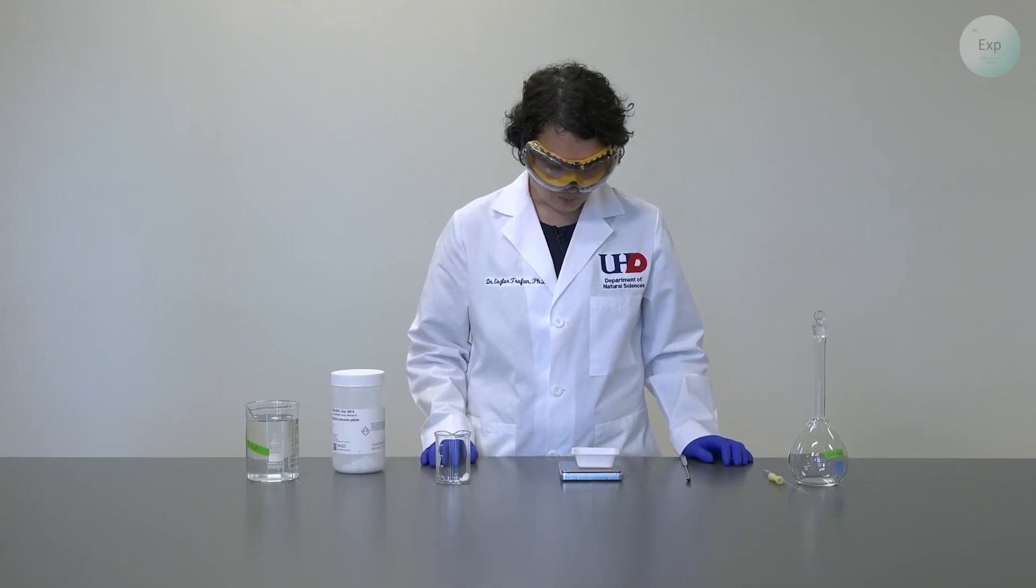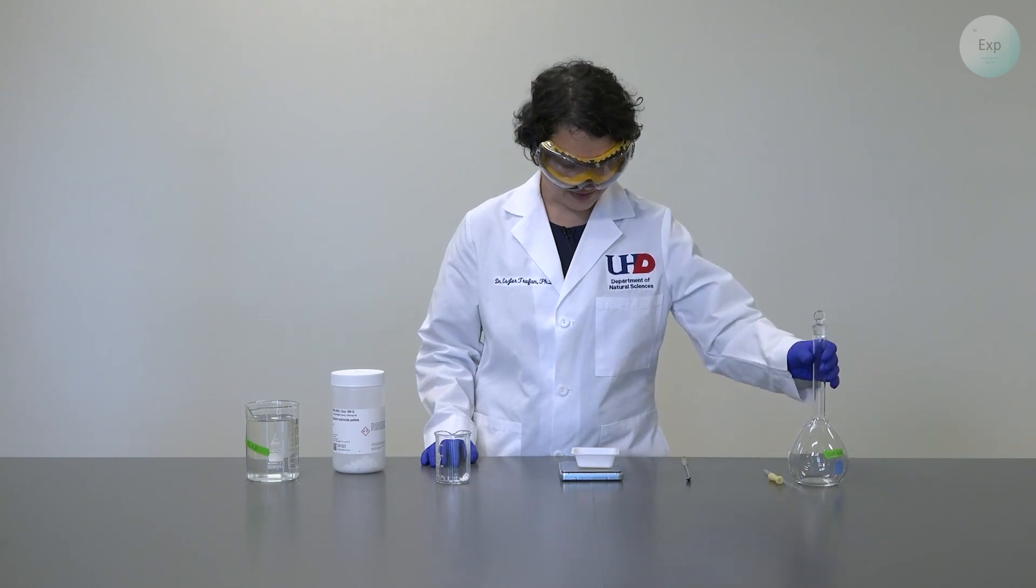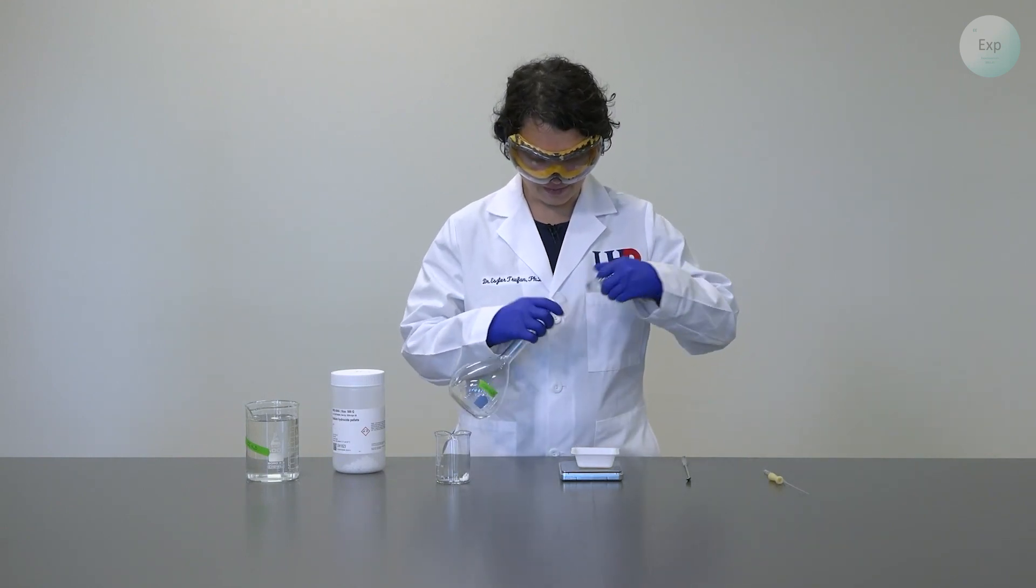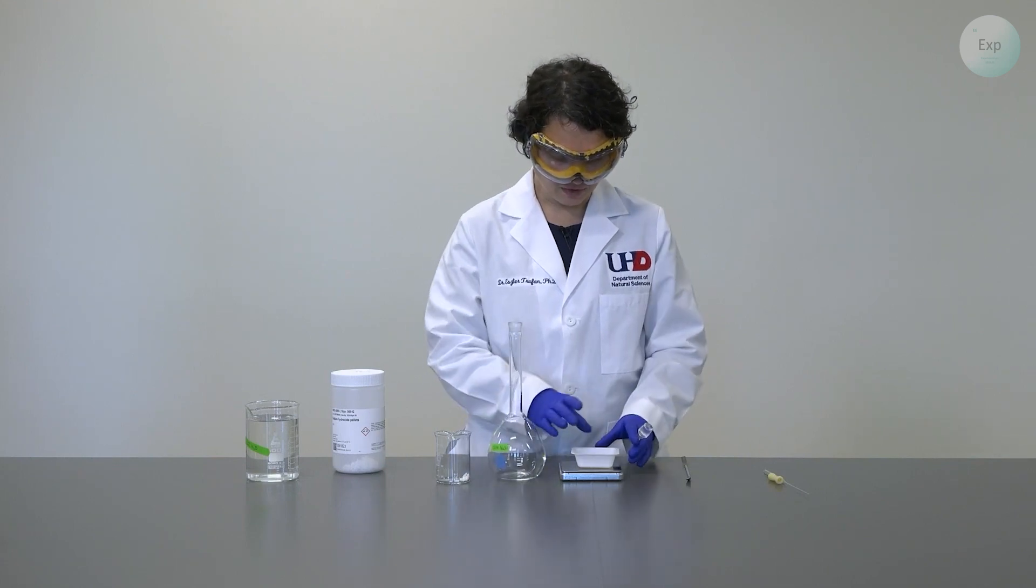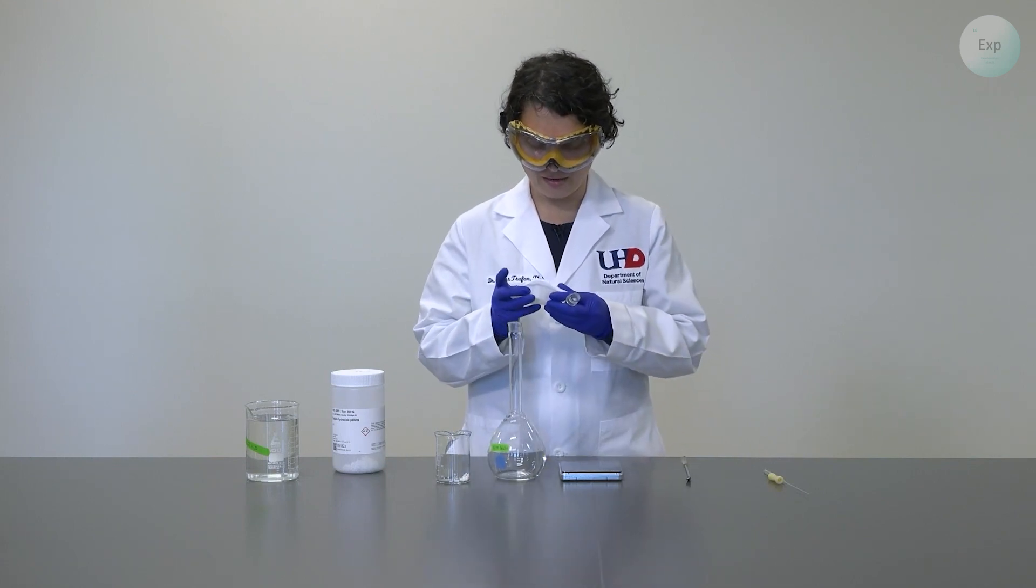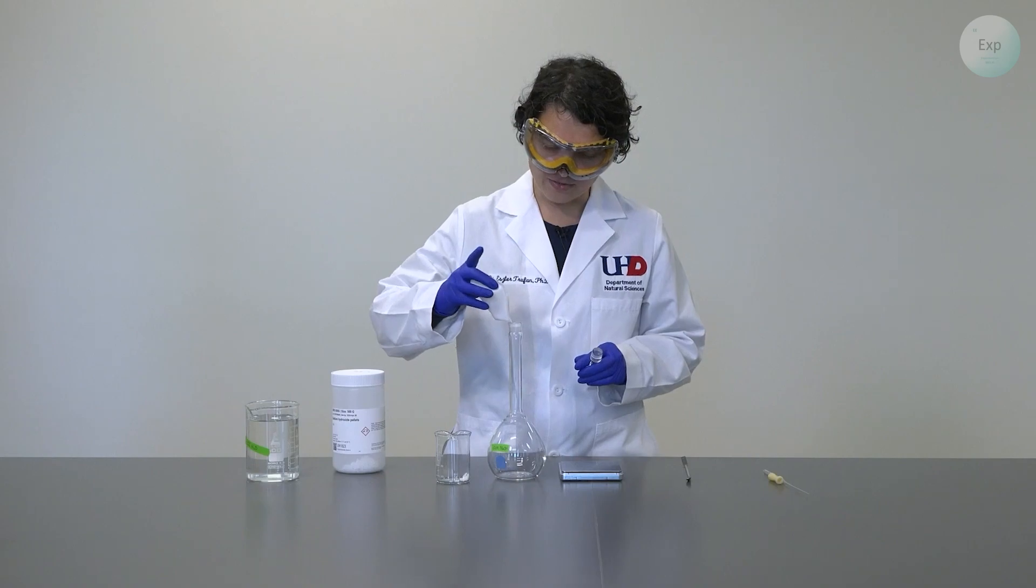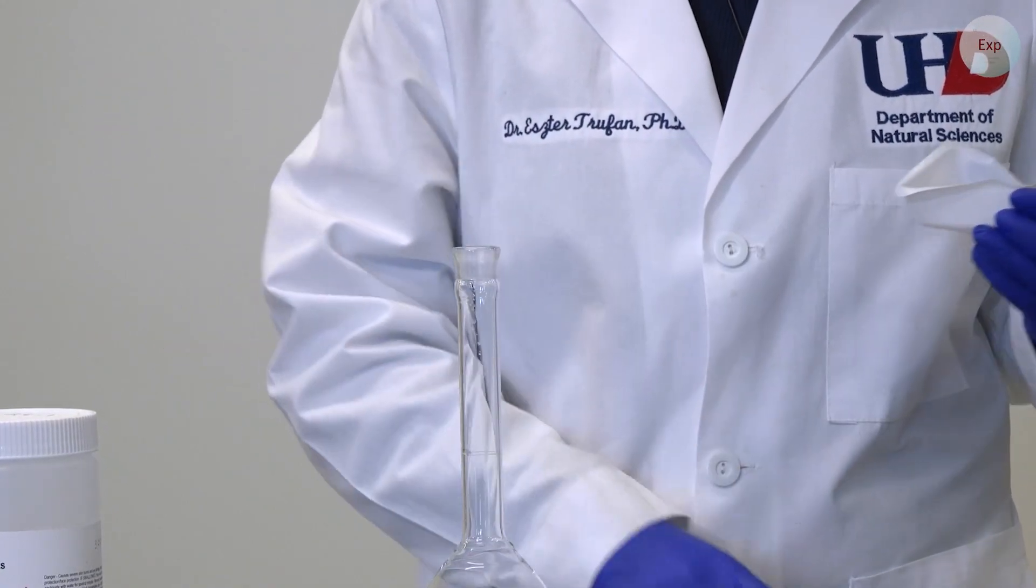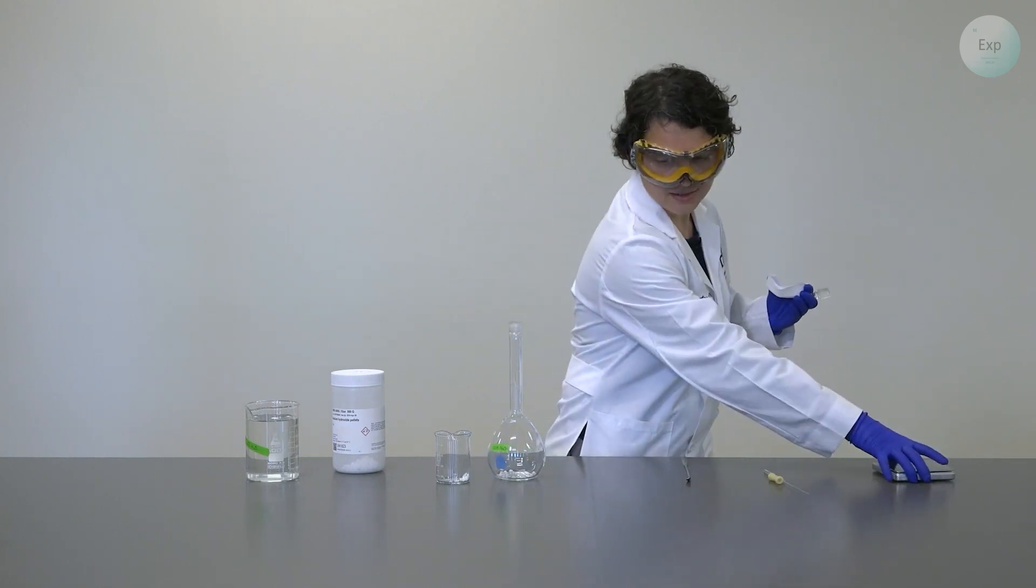I measured out exactly 2.00 grams of sodium hydroxide pellets. With that, I am done with my scale. I will take my volumetric flask, open it up, take my weighing boat, and transfer the sodium hydroxide pellets into the volumetric flask. With that, I can turn off my scale and set it aside.